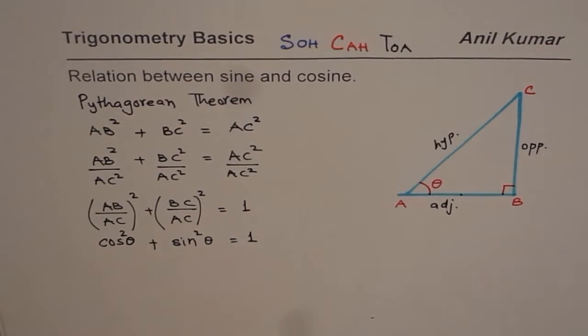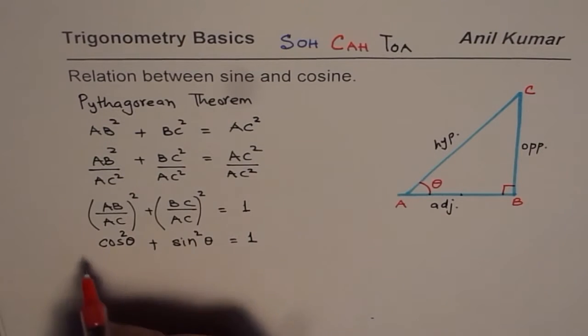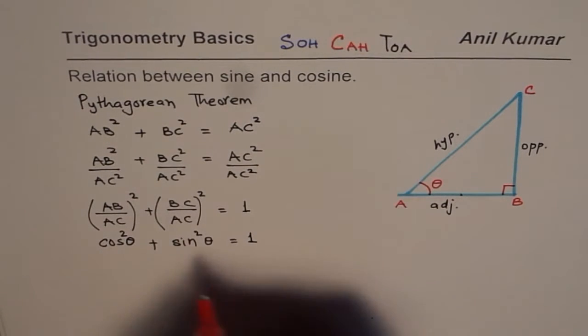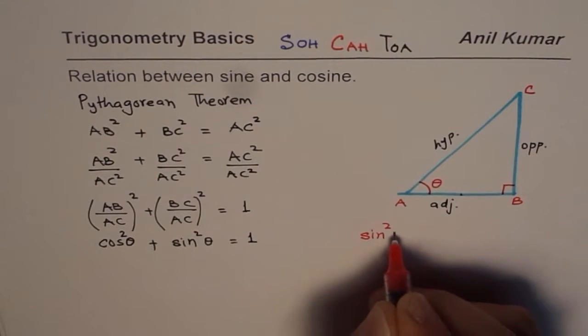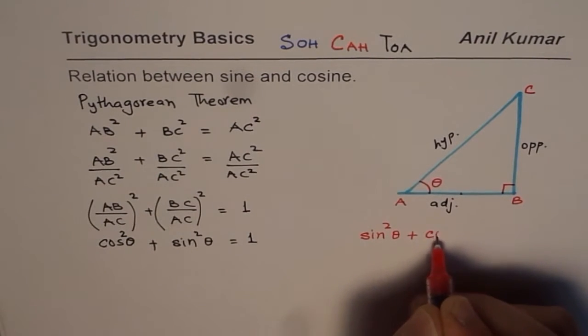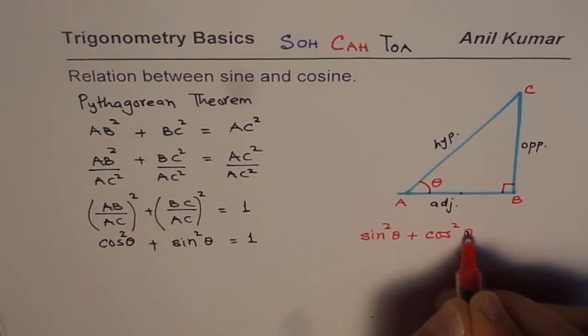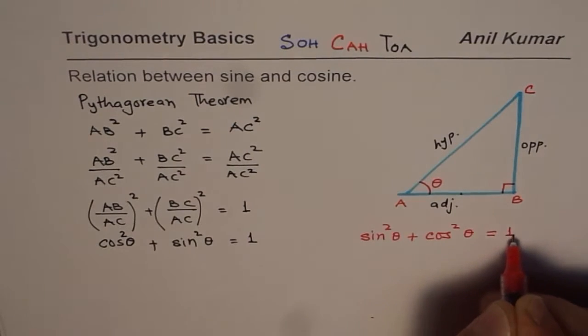Do you see that? So that is the relation which we are talking about. The relation which we just derived, normally we write this as sin²θ plus cos²θ is always equal to 1.